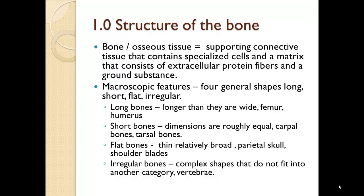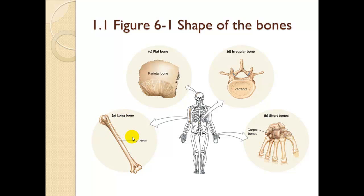Long bones are longer than they are wide — examples include the femur and the humerus. Short bones have roughly equal dimensions — examples are carpal bones and tarsal bones. Flat bones are thin and relatively broad — examples include the parietal skull and shoulder blades. Irregular bones have complex shapes that don't fit another category — the vertebra is an example. Short bones are about as wide as they are long and are found in the hands and feet.